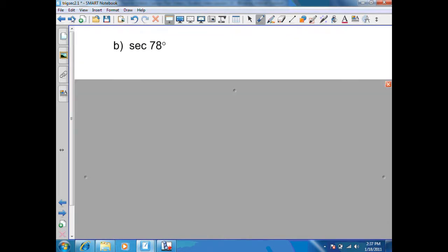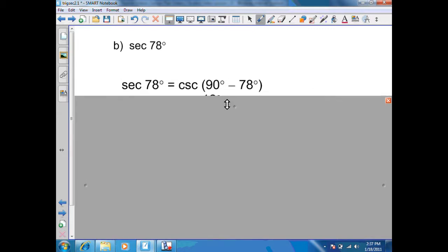Our next sample is the secant of 78. We need secant's cofunction, which is cosecant. And we also need to complement 78, which is 90 minus 78. And our final value will be cosecant of 12.